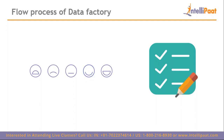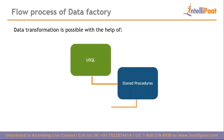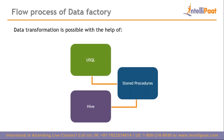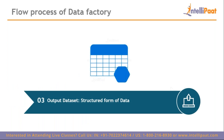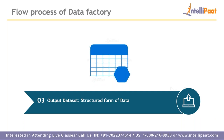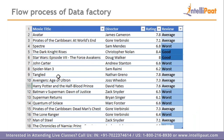Data transformation is performed in the pipeline using U-SQL, stored procedures, or Hive. After transformation, you get an output dataset. The output data will be structured, since transformations have been applied to it. For example, based on the movie rating, the data is transformed so you can see whether a film is rated average, worse, or good. This is a basic example of the transformation concept.